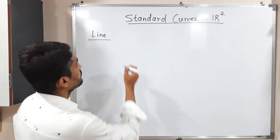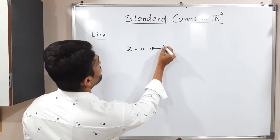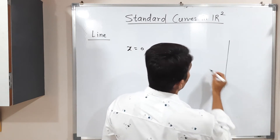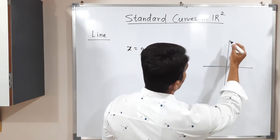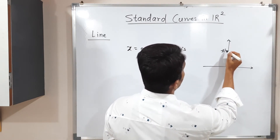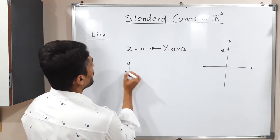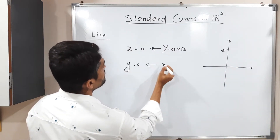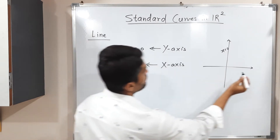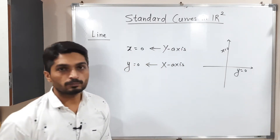When you have x is equal to zero, this is the equation of the y-axis. This is the x-axis, this is the y-axis. So its equation is x is equal to zero. When you have y is equal to zero, this is the equation of the x-axis. So equation of x-axis is y is equal to zero.